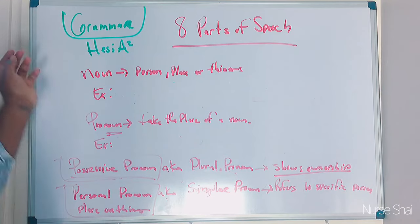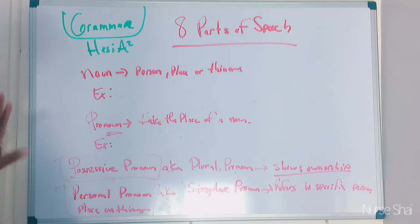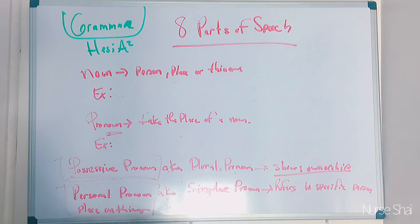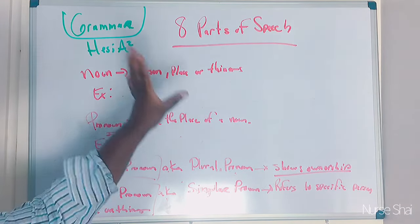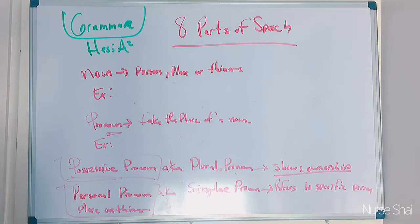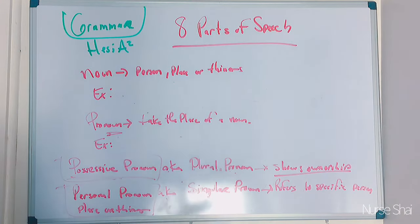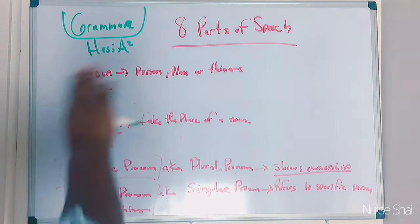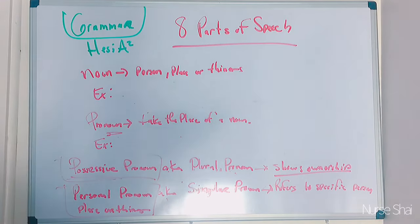On the HESI A-squared, they don't really ask you questions that are blunt, like 'explain what a pronoun is.' It's more like 'find the pronoun' or 'where's the possessive pronoun?' That's why it's so important for us to know exactly the parts of speech. If we know them, we know how to identify them. So let's get started.